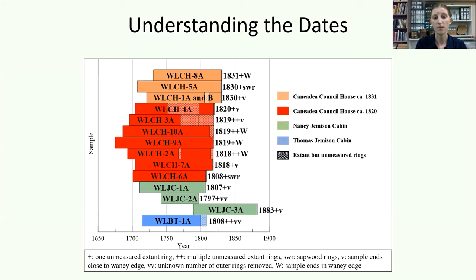The Nancy Jemison Cabin samples, here in green, more closely align with the estimated building date, probably shortly after 1807, accounting for unmeasured incomplete outer rings. The 1883 sample being an eastern hemlock most likely comes from renovation with the cabin's relocation to Letchworth. The WLBT sample in blue, an oak, is from a dismantled cabin the park now cares for, once owned by Thomas Buffalo Tom Jemison, a grandson of Mary Jemison. However, because we recovered only one measurable sample, it was not possible to firmly date it.